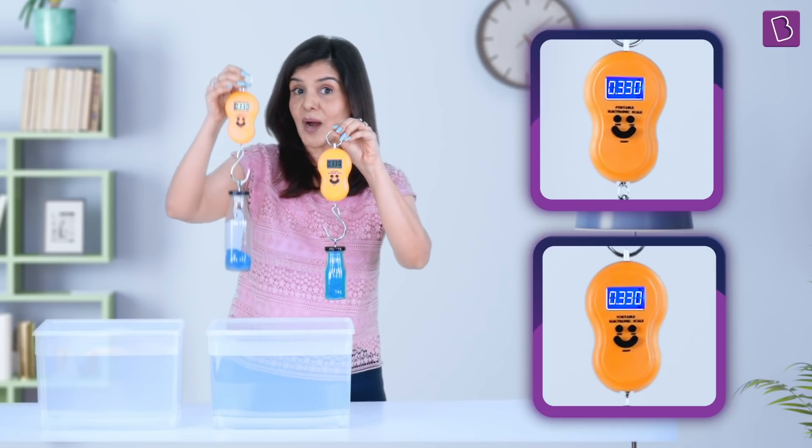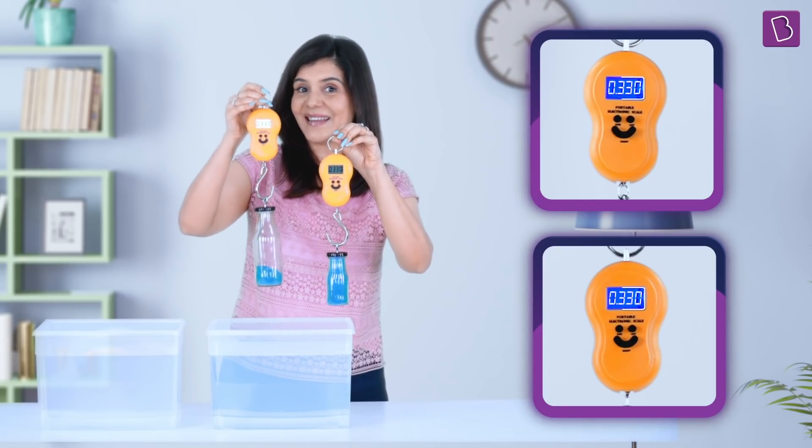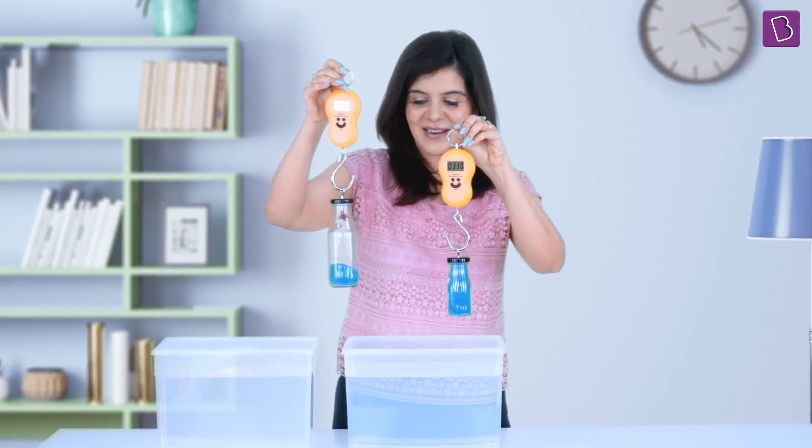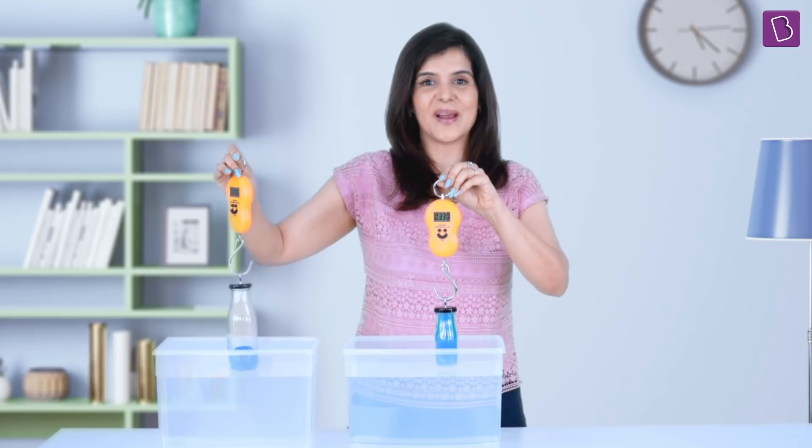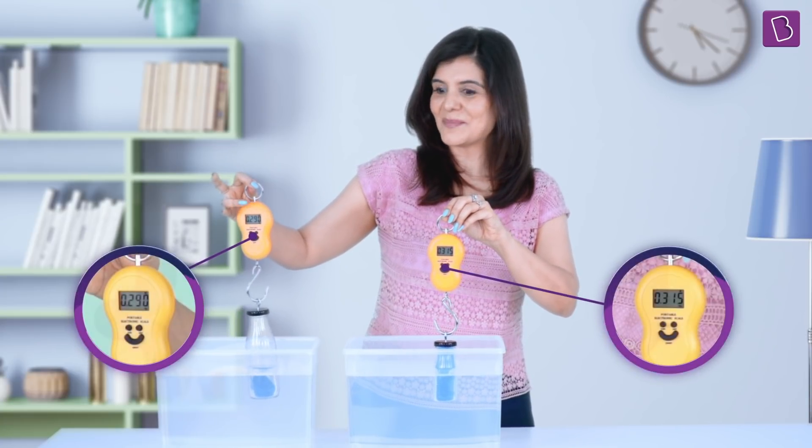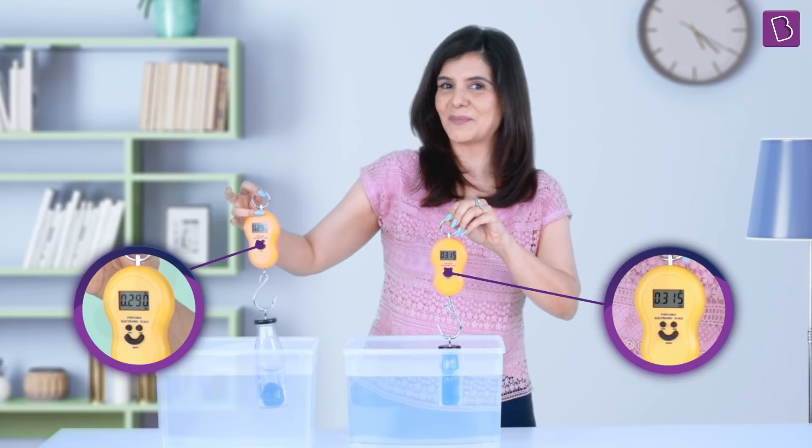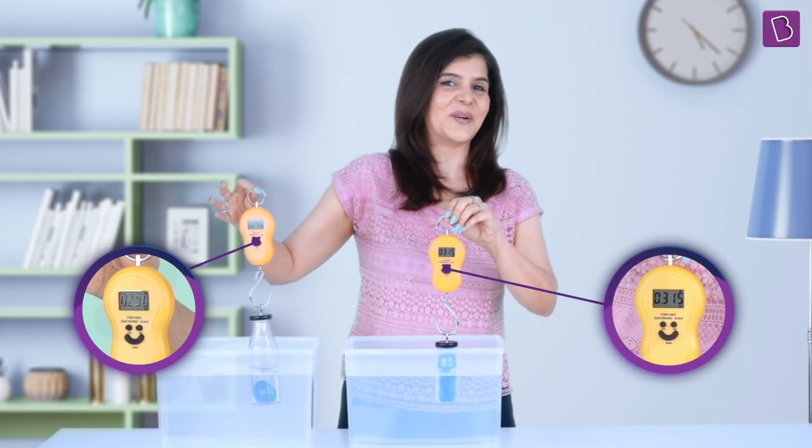But clearly, one bottle is larger in size than the other one. Now let's try pushing them in water. When these two bottles are pushed in water, the weighing machine attached to the larger bottle starts giving a lower reading.